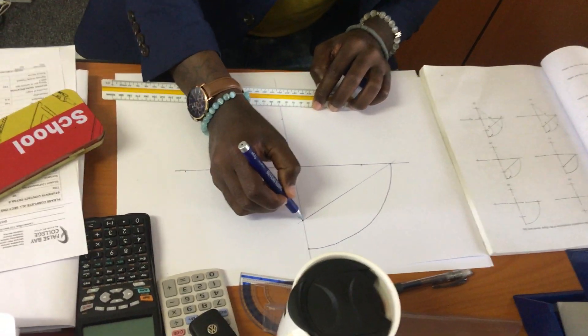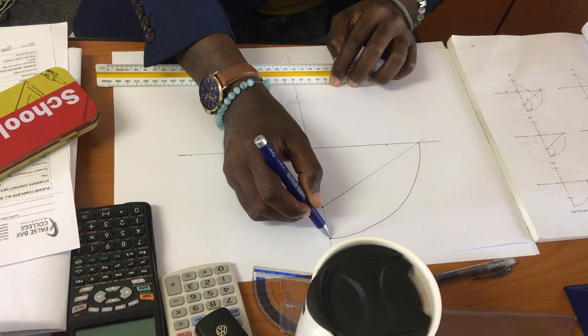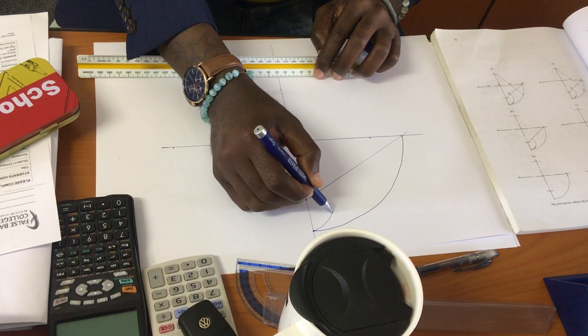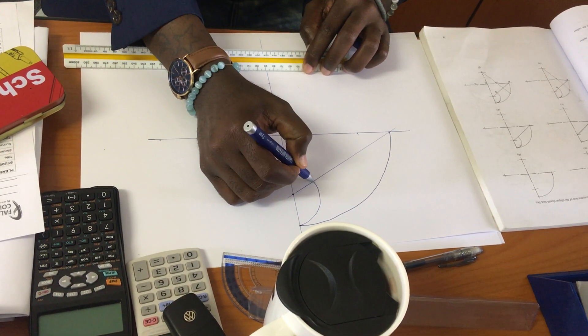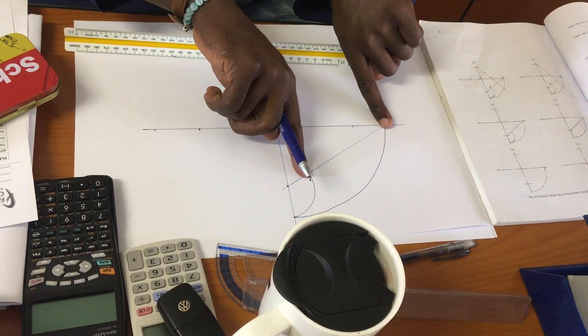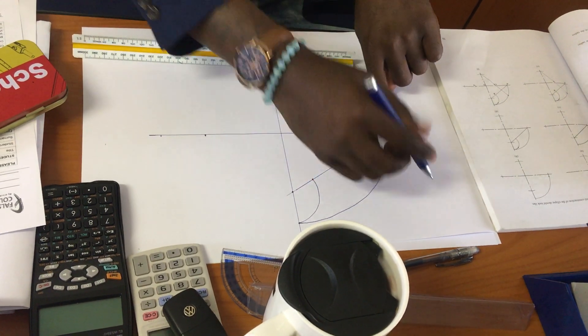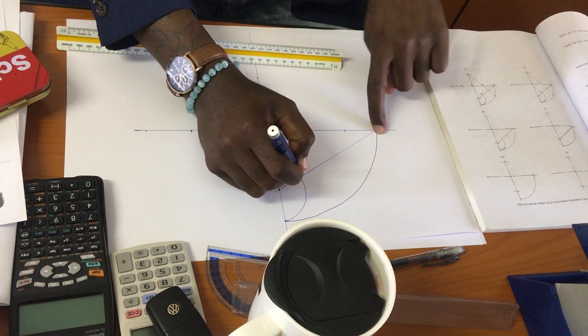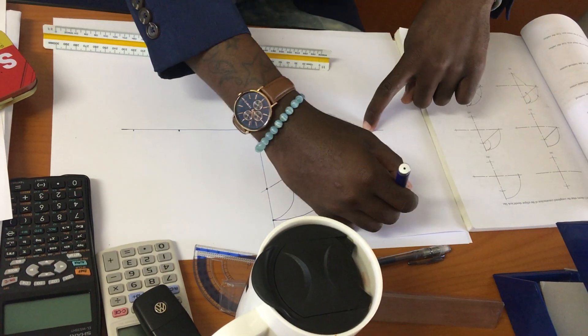You pin it on there and you bring this down where it touches, that's where you stop. Now you measure this to this position and you make two points. You take the compass when you've measured these two points.